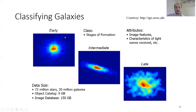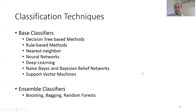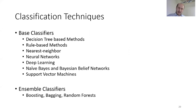Galaxies can be classified into early, intermediate, or late states. Techniques used for classification include decision trees, Bayes methods, rule-based methods, nearest neighbor methods, neural networks, deep learning, naïve Bayes and Bayesian belief networks, and support vector machines. We also have ensemble classifiers like boosting, bagging, and random forests.